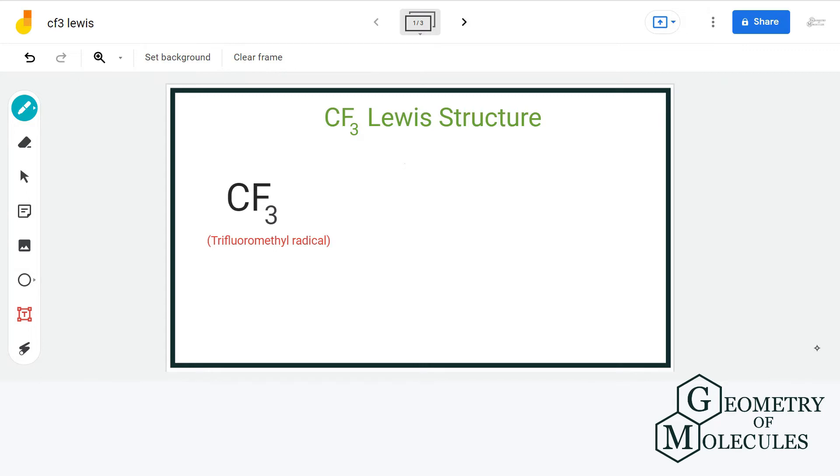So, for determining the Lewis structure of CF3, let us count the total number of valence electrons. We have one carbon atom having four valence electrons and three fluorine atoms having seven valence electrons. Now, that gives us a total of 25.